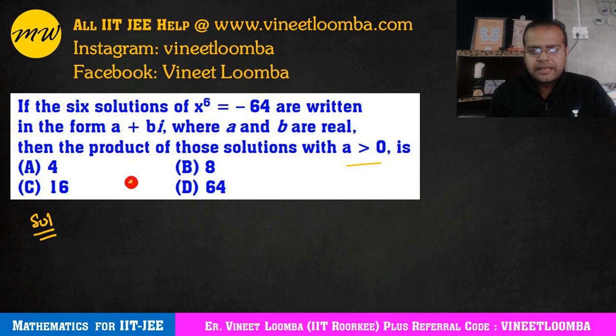So x ki power 6 hai. x basically is a complex number here. So for taking in complex number, I will write this as z. So now first we have to convert this to polar form. Because I'm going to apply De Moivre's theorem. To convert to polar form, 64 will remain as it is. So minus one, the polar form of minus one will become e to the power i pi. This way it will be formed.